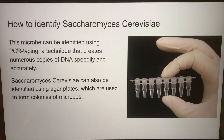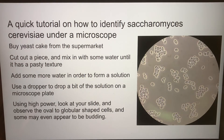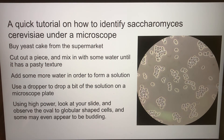Saccharomyces cerevisiae can be identified using PCR typing, a technique that creates numerous copies of DNA speedily and accurately. It can also be identified using agar plates, which are used to form colonies of microbes. For a quick microscope tutorial: buy yeast cake from the supermarket, cut out a piece and mix it with water until it has a pasty texture, add more water to form a solution, use a dropper to place a bit of the solution on a microscope slide, and using high power, observe the oval to globular shaped cells — some may even appear to be budding.